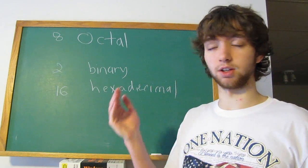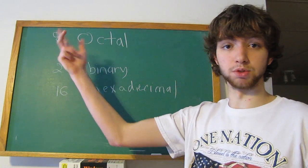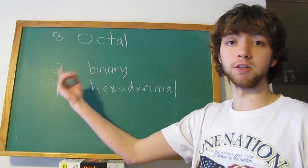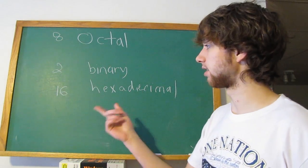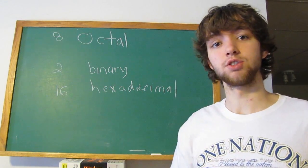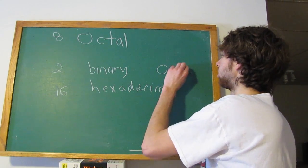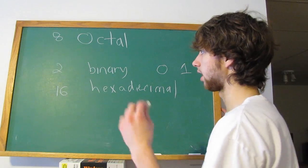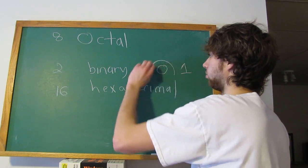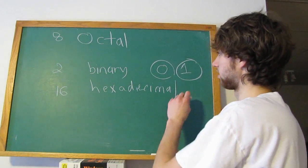What this means is that there are 8 different symbols that we can use. For binary, there's 2 different symbols. Hexadecimal, there's 16. Just to illustrate this, for binary, you have a 0 and a 1. That means it's a base 2, because you have 2 symbols.